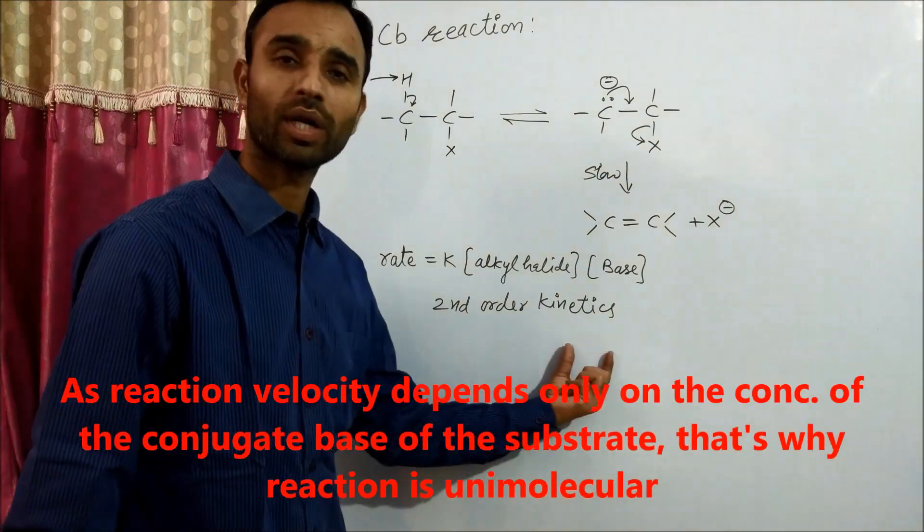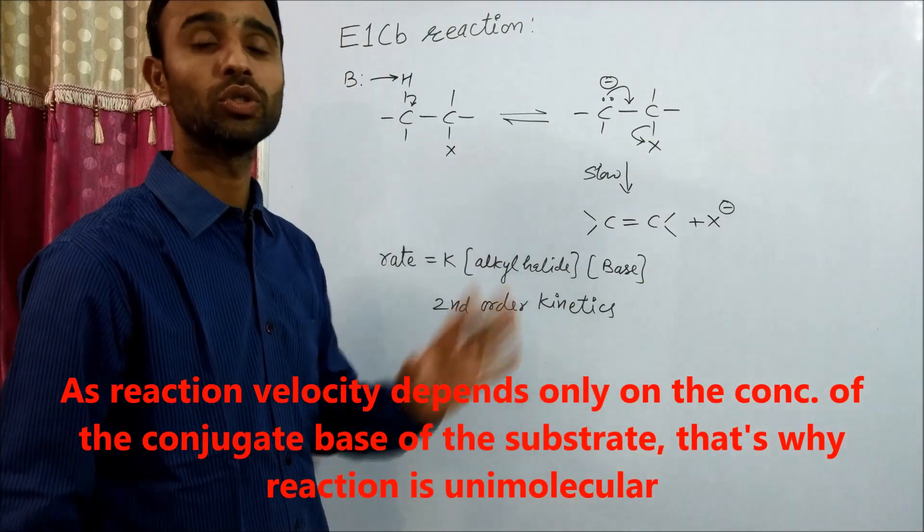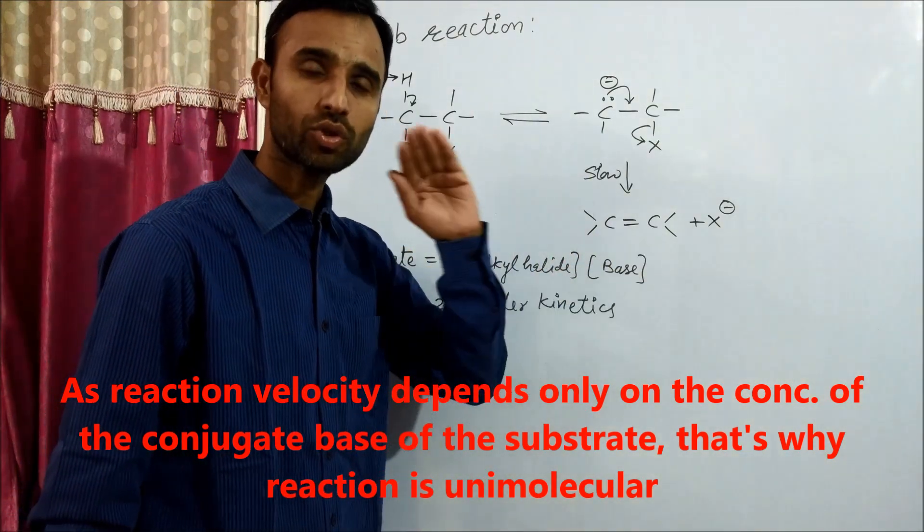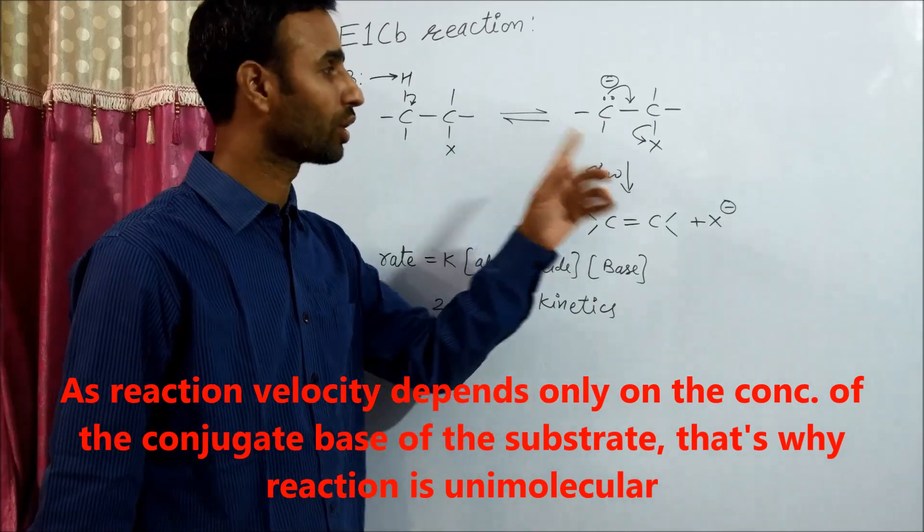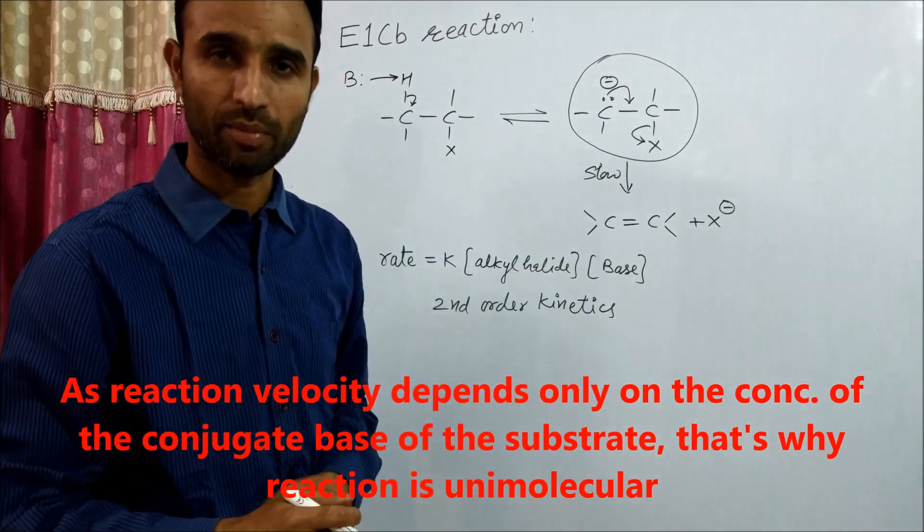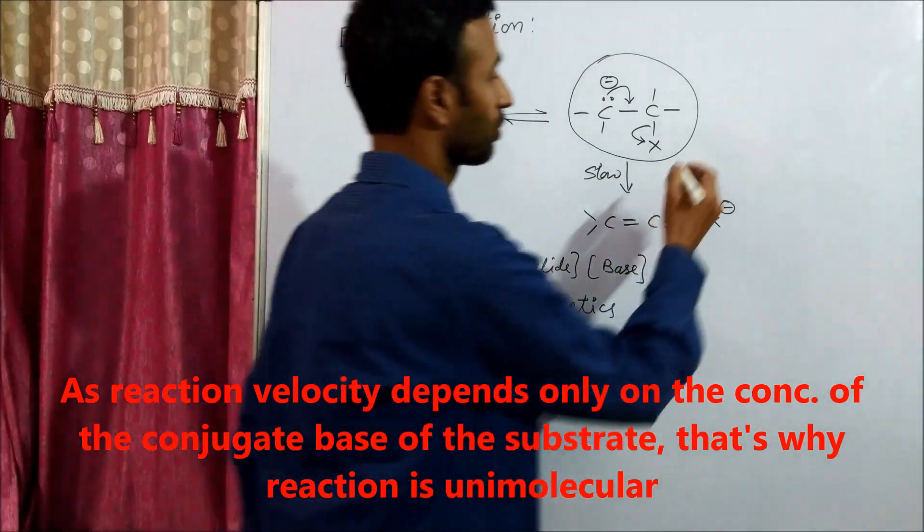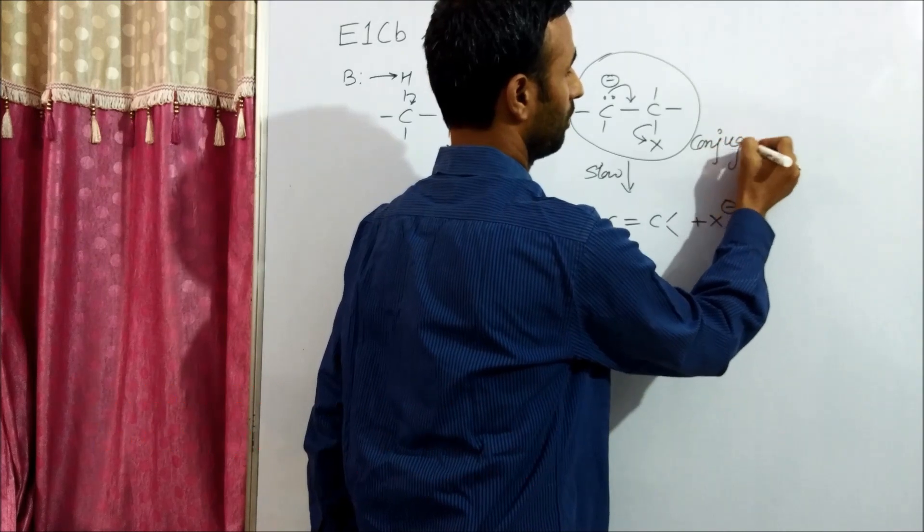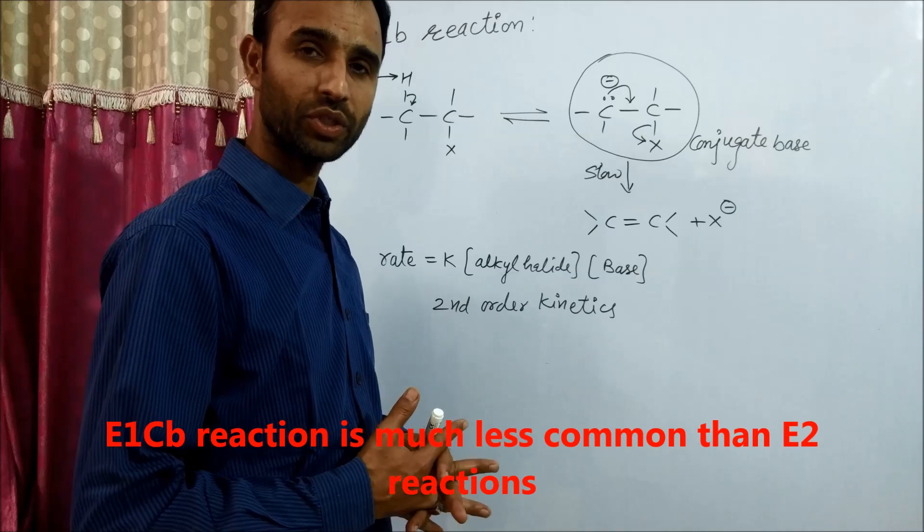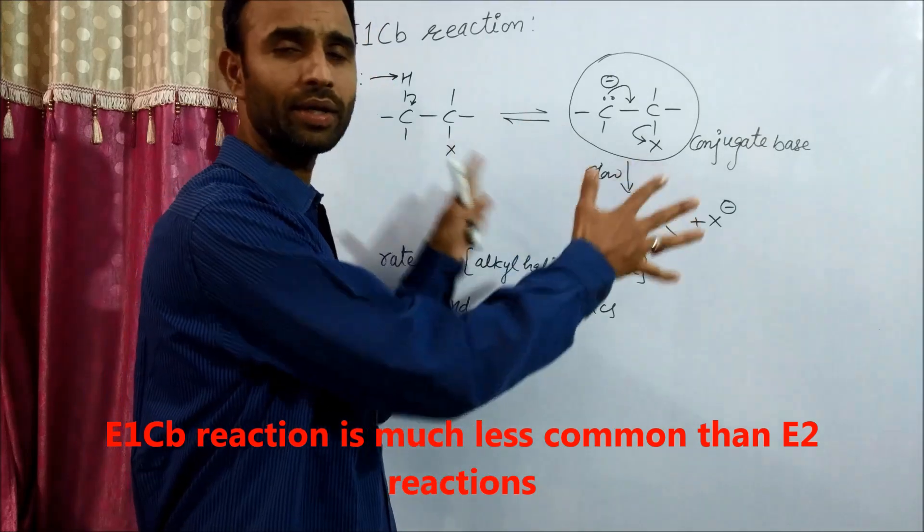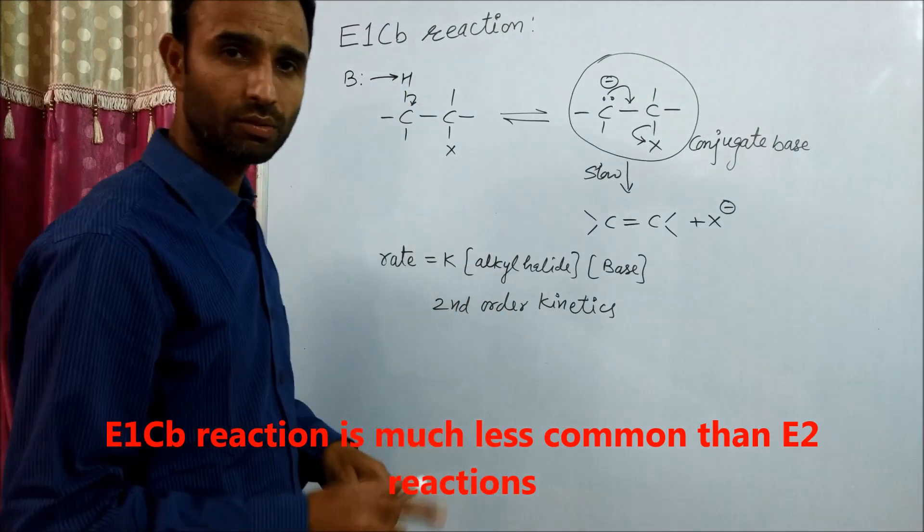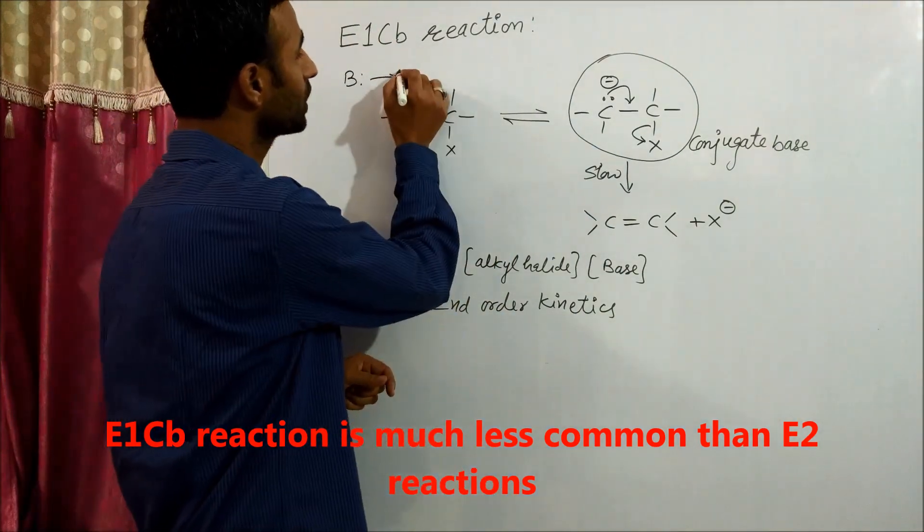Though it follows second order kinetics, it is a unimolecular reaction because alkene formation solely depends on the carbanion (conjugate base) formation. This is the third type of beta elimination reaction. It competes with E2 reaction and takes place when the hydrogen is highly acidic.